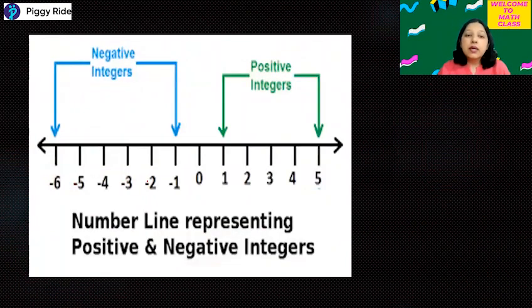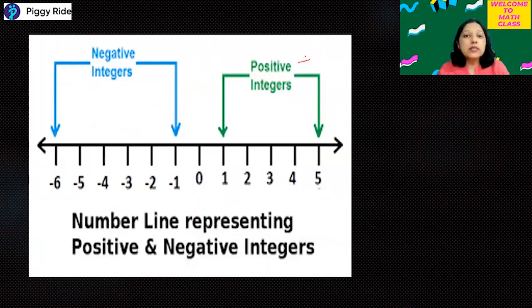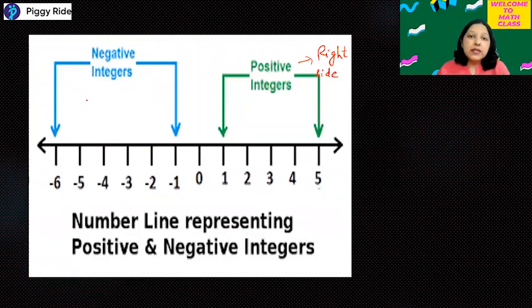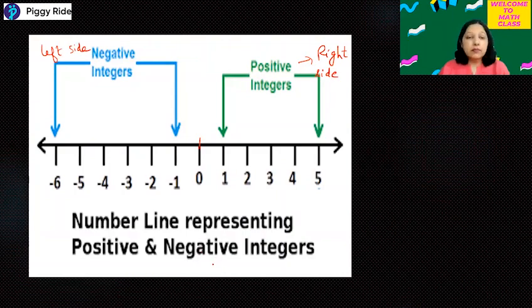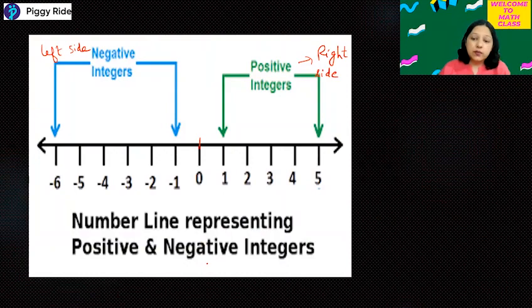This is a number line and you can see how we can represent integers on it. All positive integers are on the right side of zero, and all negative integers are on the left side of zero. In the middle you can see zero. So on a number line you can represent positive, negative, and zero.